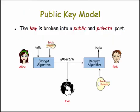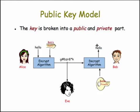Here's the public key model that it uses. The cryptographic key is broken into two parts: a public and a private part. The public part is used for encrypting, so Bob's public key is used by Alice to encrypt the word 'hello,' running it through the encrypt algorithm, and then sending the result — this gibberish — over to Bob. He uses the private part of his key to decrypt the gibberish and retrieve the word 'hello.'